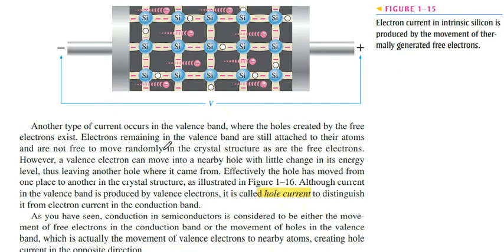The holes move in the valence band and the electrons move in the conduction band, and both act as current passing through the material.